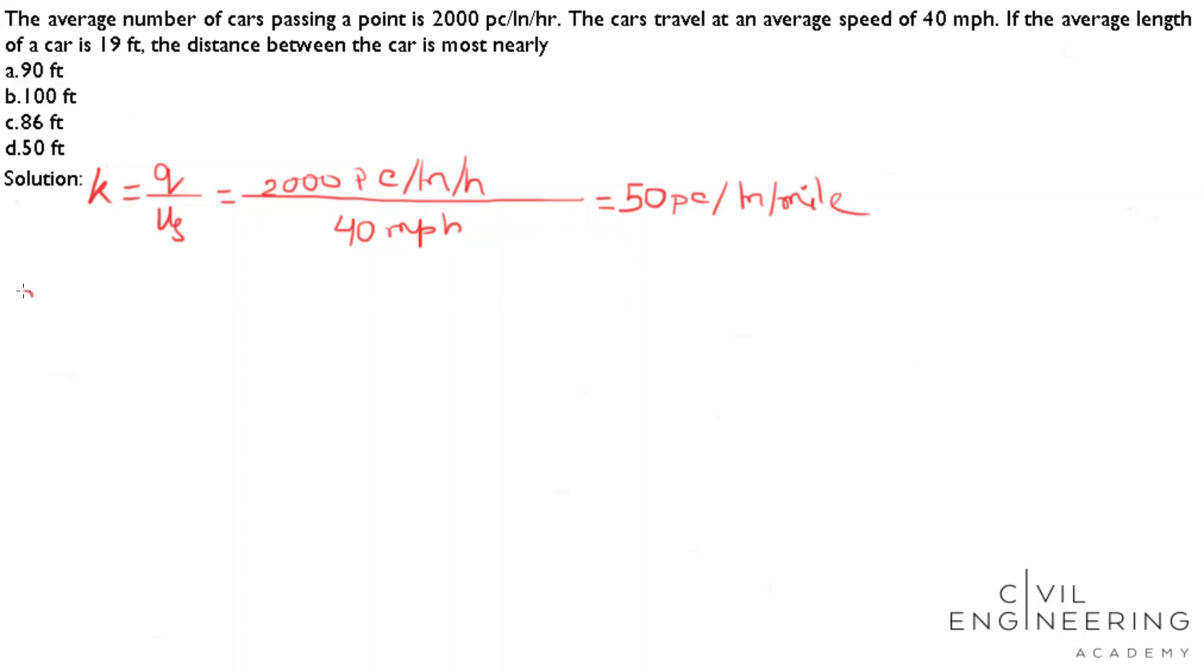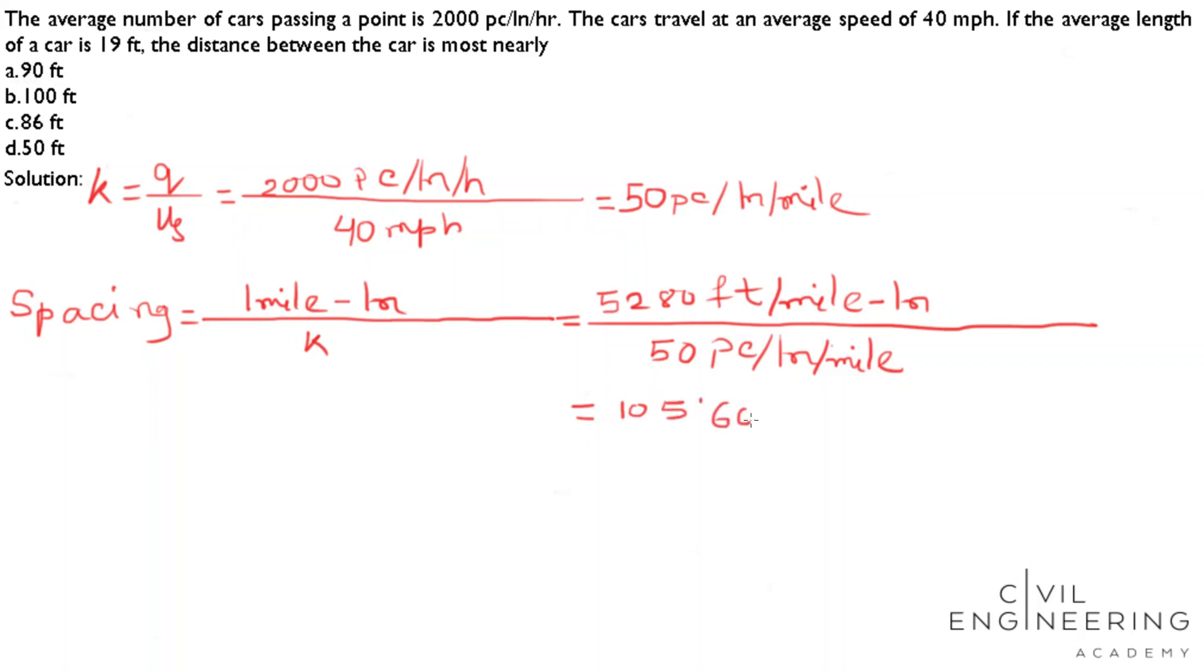Now I'm going to calculate spacing. Spacing equals 1 mile length divided by density k. We have to convert miles to feet. So 1 mile equals 5,280 feet per mile length divided by our density, 50 passenger cars per lane per mile. Now I get the value 105.60 feet per passenger car.